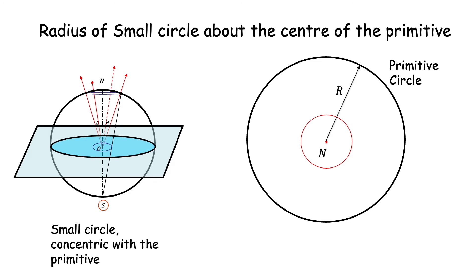What is the radius of this small circle? We get a small circle about the center of the primitive and want to find its radius. Any pole on this circle is at angle theta to the center, because all directions it represents are at angle theta to the vertical axis. The center of the primitive represents the vertical axis. So the distance of that pole, little r, is given by R·tan(θ/2), where R is the radius of the primitive. This is also the radius of the small circle.